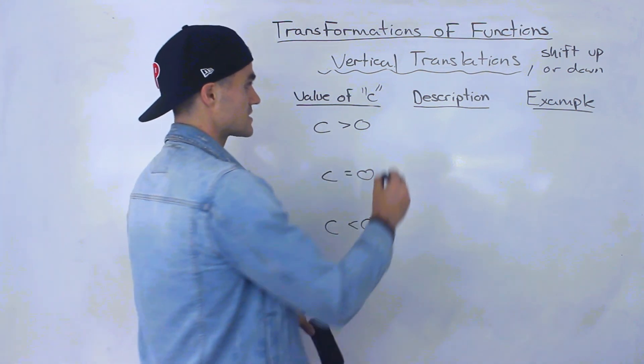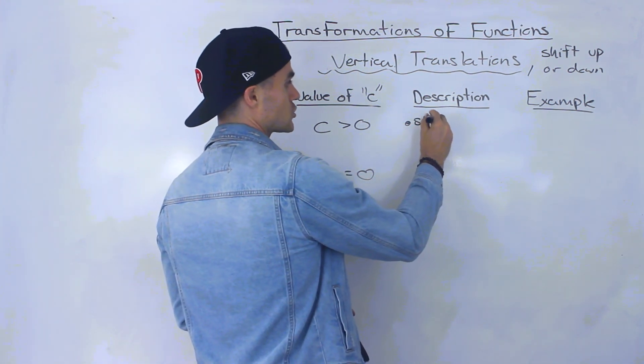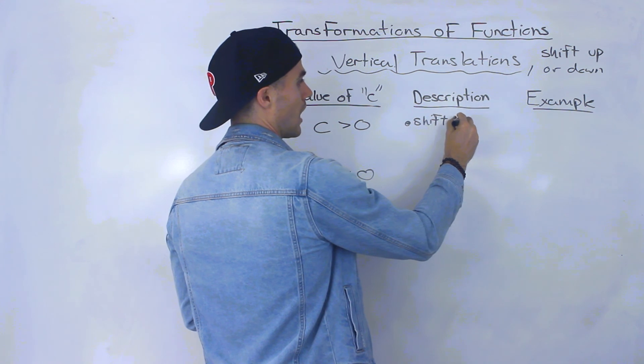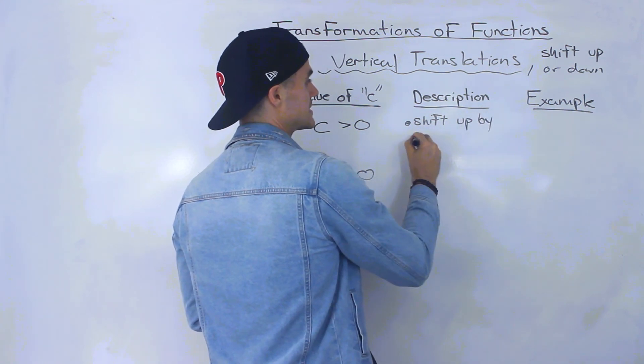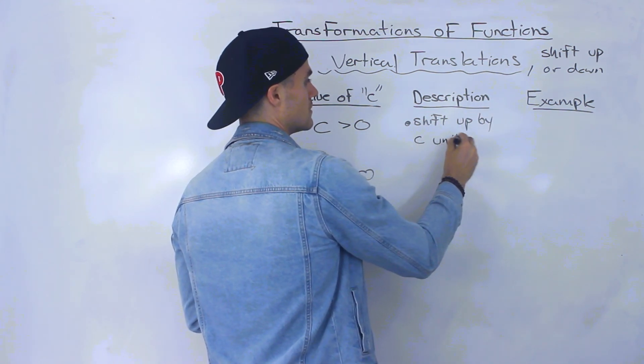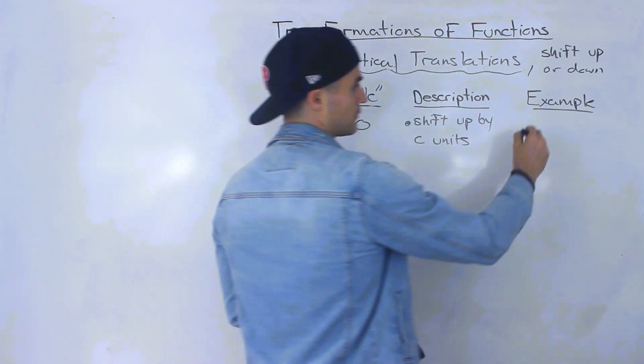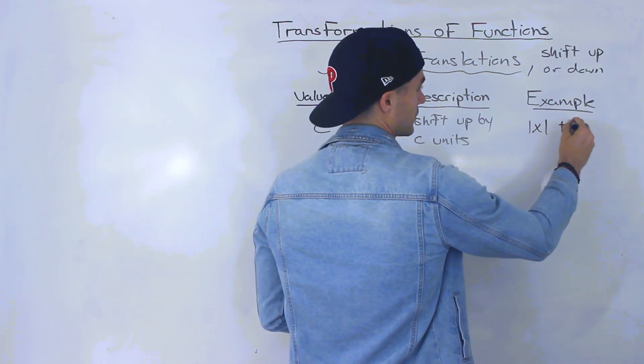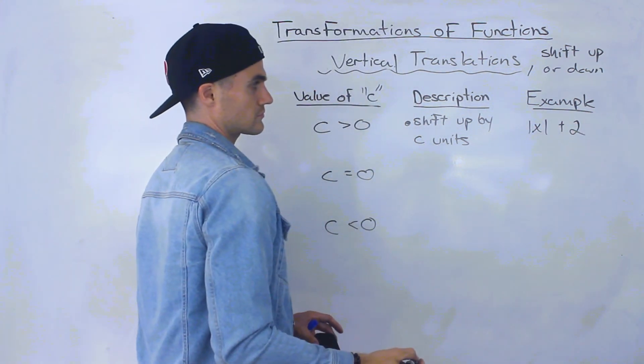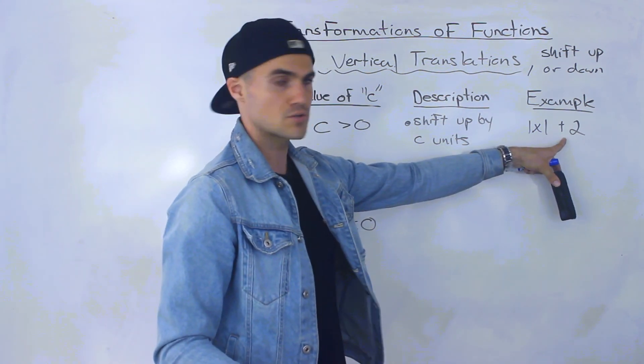Now if C is greater than zero, what we're doing is we're taking a function and shifting it up by C units. So an example of that is if we have like the absolute value of X plus two.